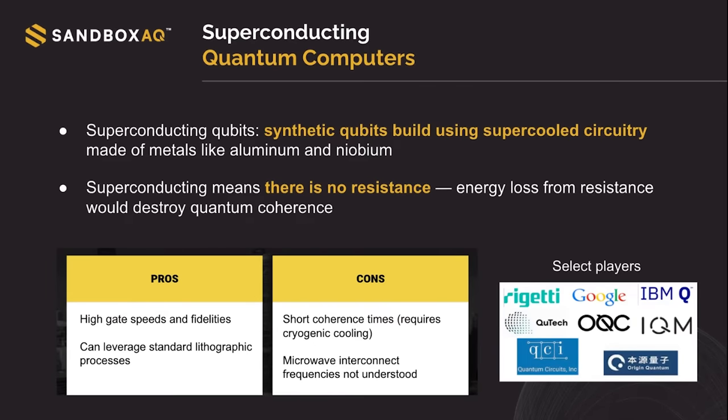We're going to start talking about how quantum computers operate. They do it using qubits, and we can get qubits in different ways. The first one, probably the most popular one, is superconducting quantum computers. This type of qubit uses synthetic qubits built using supercooled circuits made of metals like aluminium. Being superconducting means there is no resistance, so there is no energy loss from resistance. This is very important for qubits because of quantum coherence. Can you tell us more about what quantum coherence is and why it's so important?